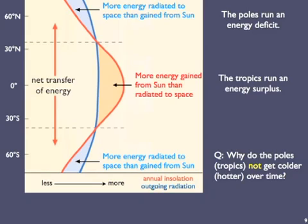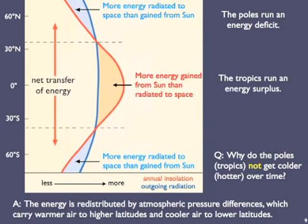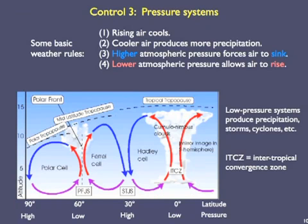The ideas illustrated by this diagram raise a couple of key questions. Why don't the poles, which are running an energy deficit, keep getting progressively colder? And why don't the tropics, which are running a surplus, keep getting progressively hotter? Well, solar radiation is redistributed by pressure differences in the atmosphere, which carry warmer air to higher latitudes and cooler air to the tropical ones. The net transfer of energy from low latitudes to high latitudes prevents runaway temperature extremes. Such pressure systems constitute the next of our regional climate controls.